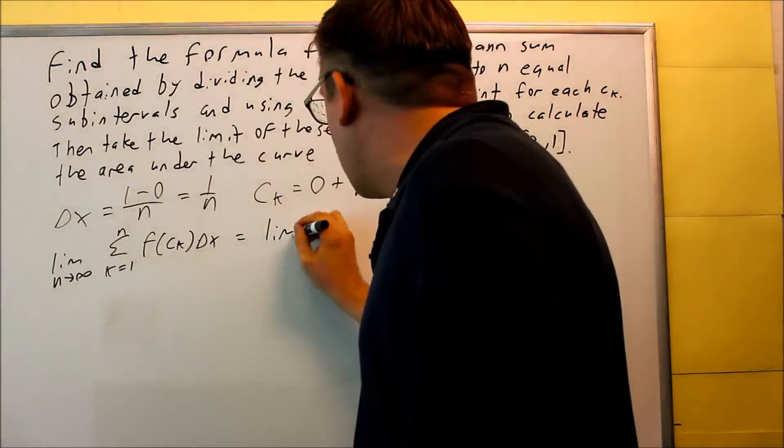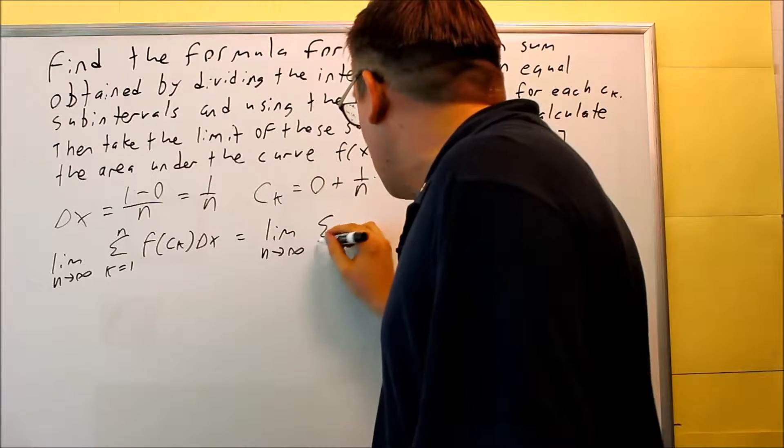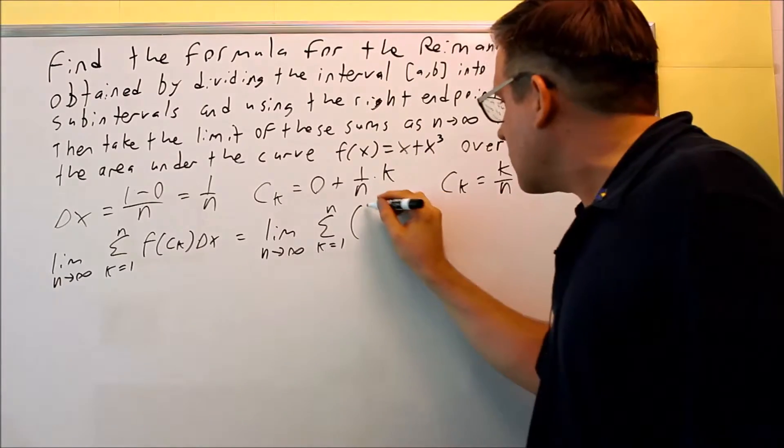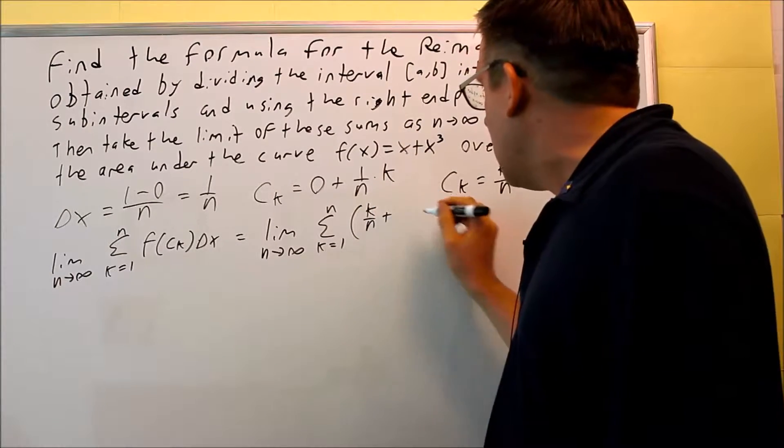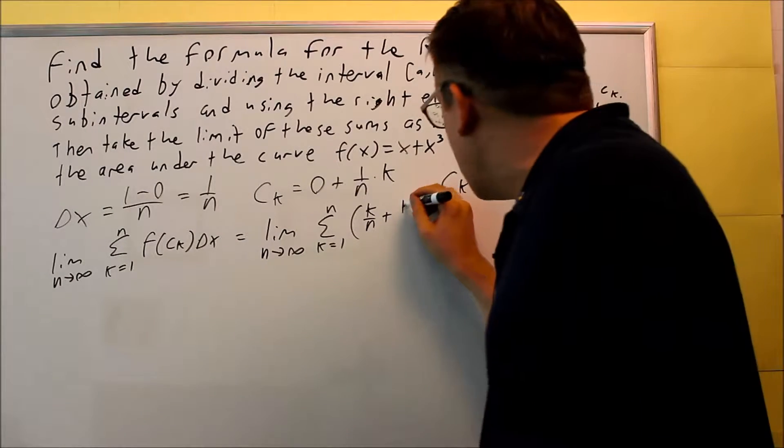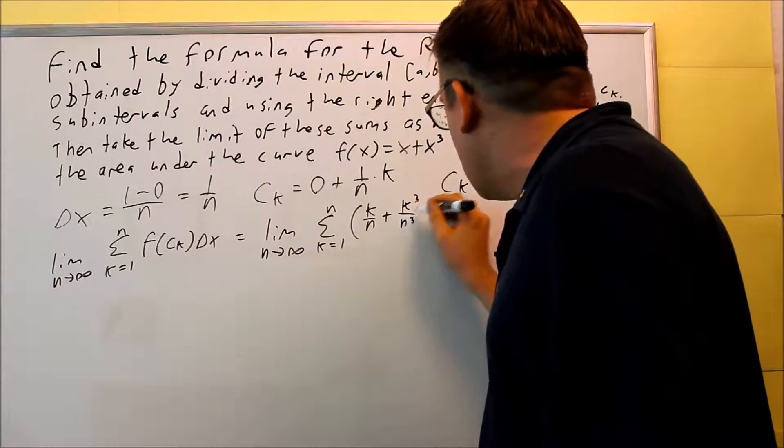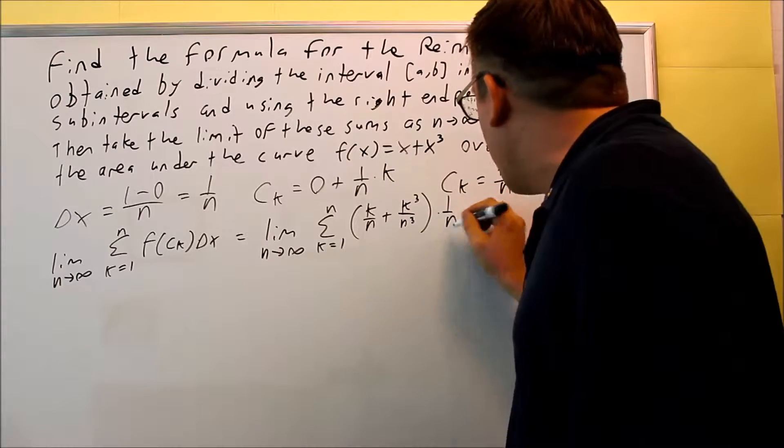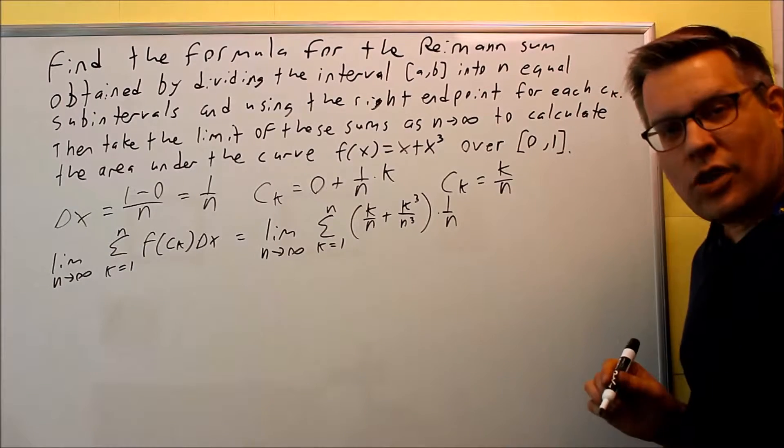So this is what that will look like. Limit as n goes to infinity. Summation k equals 1 to n. And then I have k over n. And if I put k over n into here and it's cubed, I'm just going to go ahead and cube the top and bottom right away. So I get k cubed over n cubed and then times 1 over n because that's my delta x.